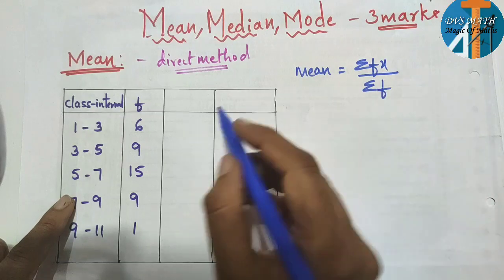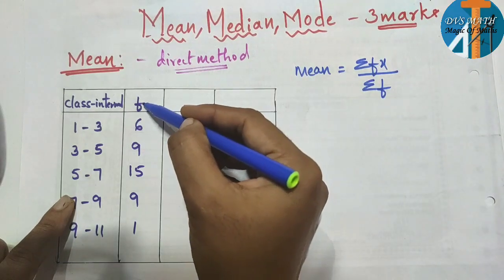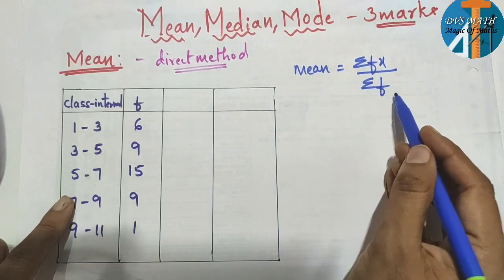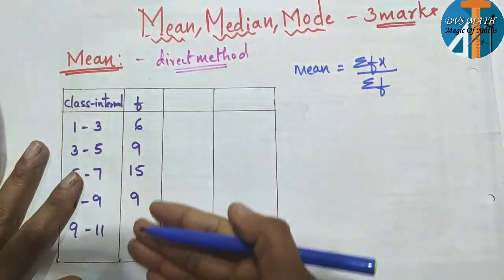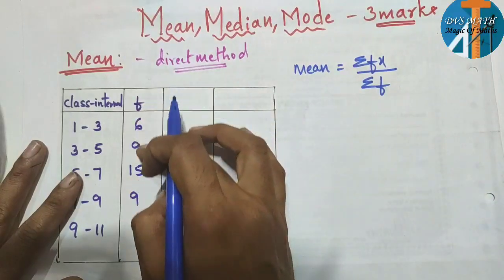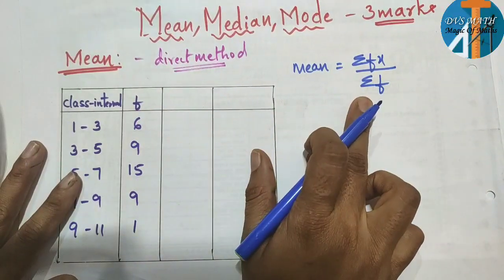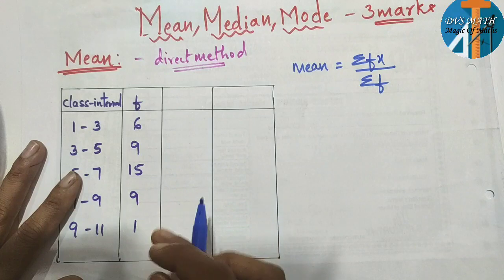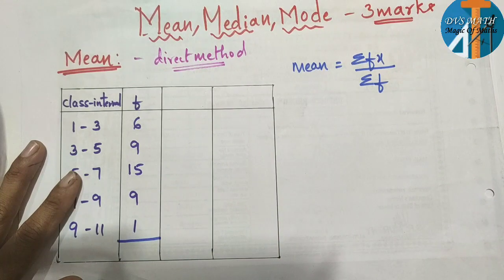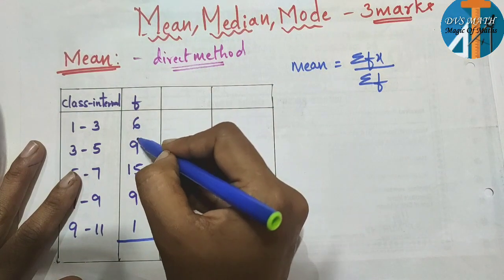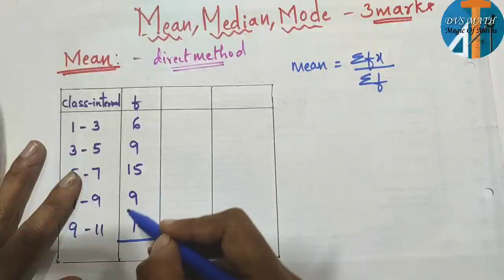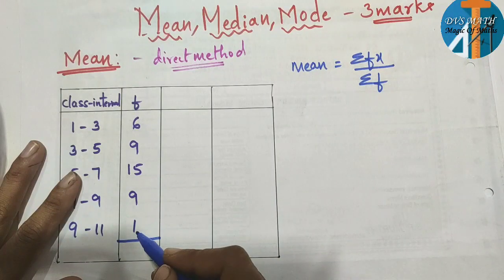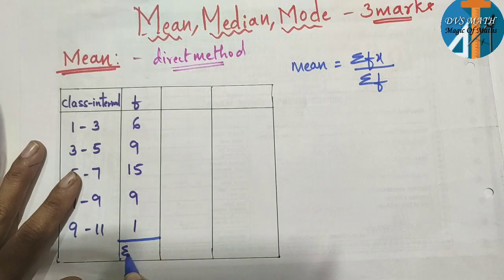So, f is already given. σfx means the sum of all fx values. Let us add all the f values: 6 plus 9 is 15, plus 15 is 30, plus 9 is 39, plus 1 is 40. So σf = 40.